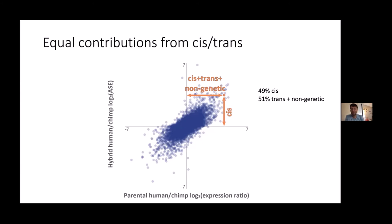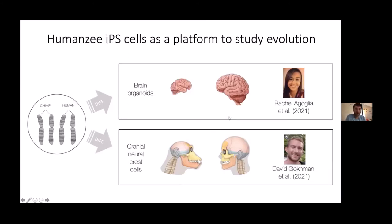One of the best aspects of using iPS cells is you can differentiate them into a wide range of cell types. We carried out two different projects. One was looking at brain organoids to study the evolution of brain size — that was work done by Rachel Gaglia, published earlier this year. The other project, by postdoc David Gachman, was studying the evolution of the human face.